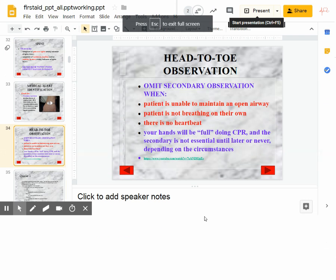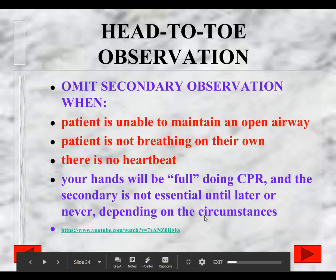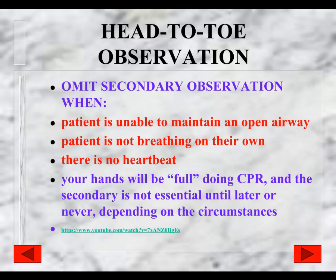We're going to pick up where we left off with head-to-toe assessment. If you remember, we talked about airway, breathing, circulation, and level of consciousness. At any time, if airway, breathing, circulation, and level of consciousness are okay, we continue on down to do the head-to-toe assessment of the patient. We always monitor the patient's airway, breathing, and circulation continuously.